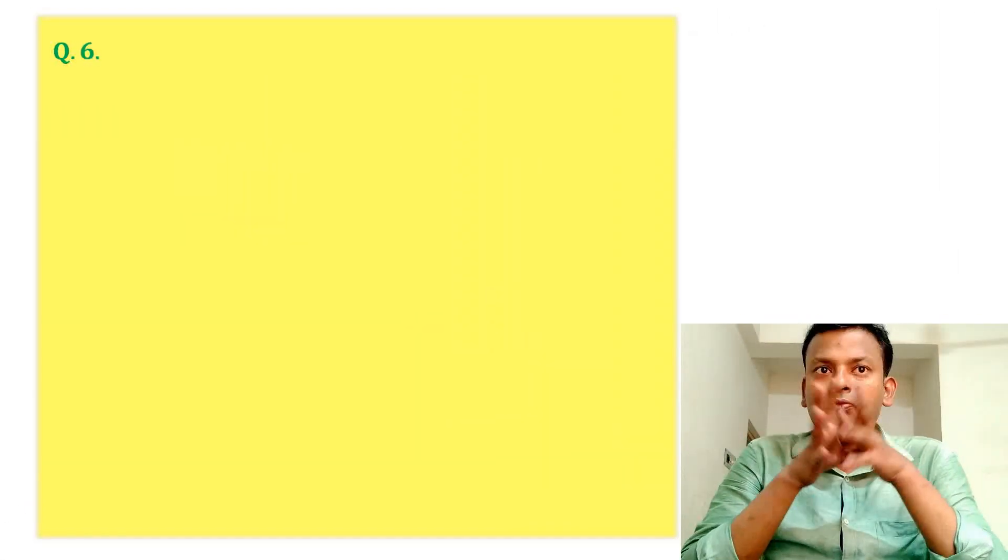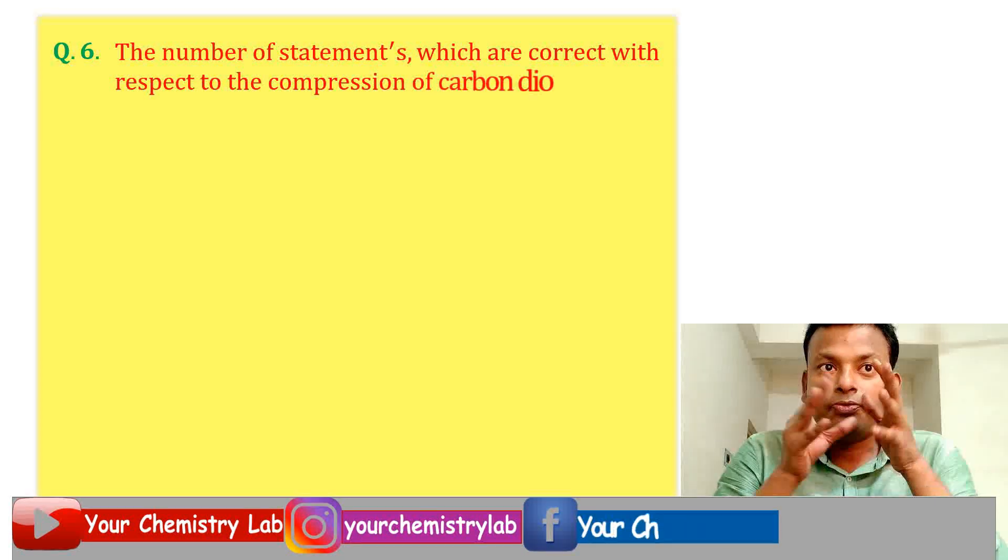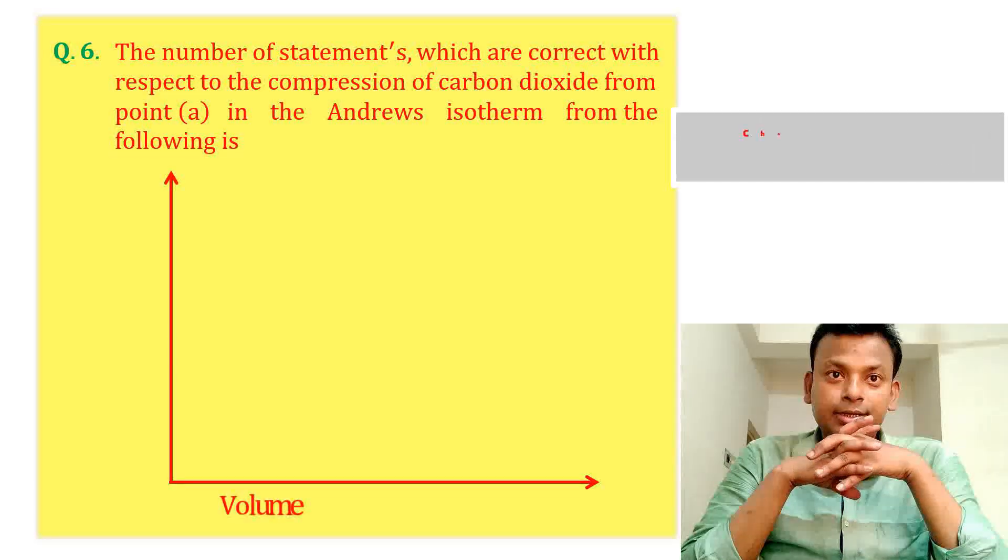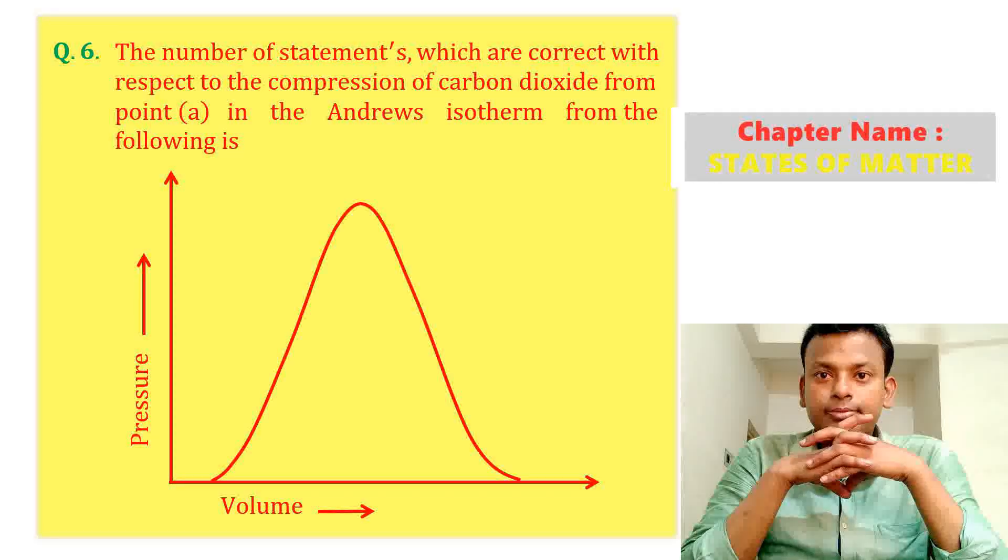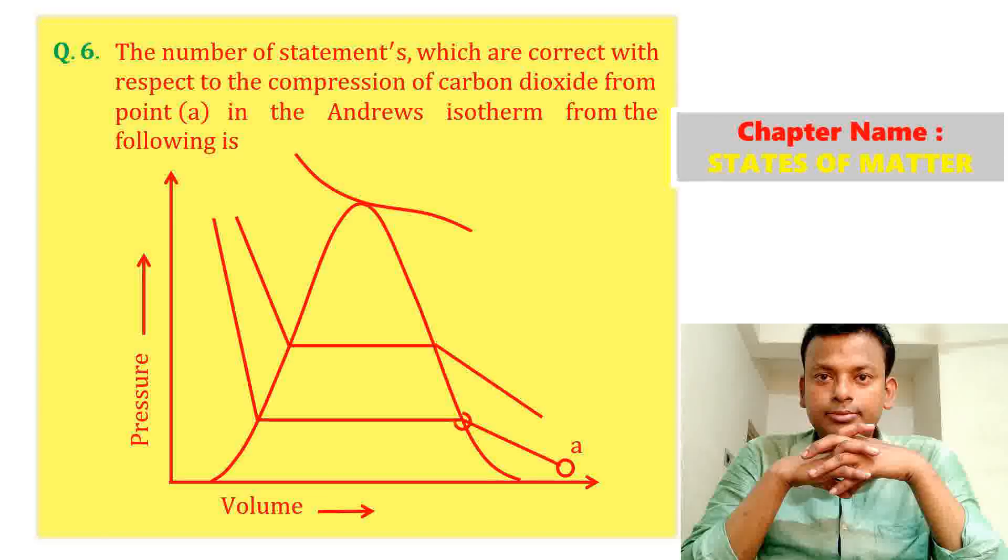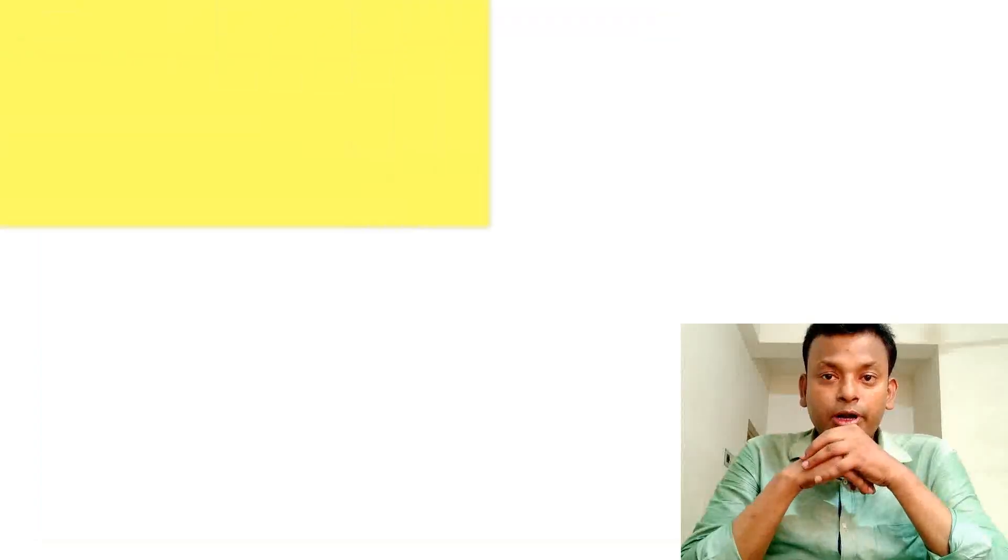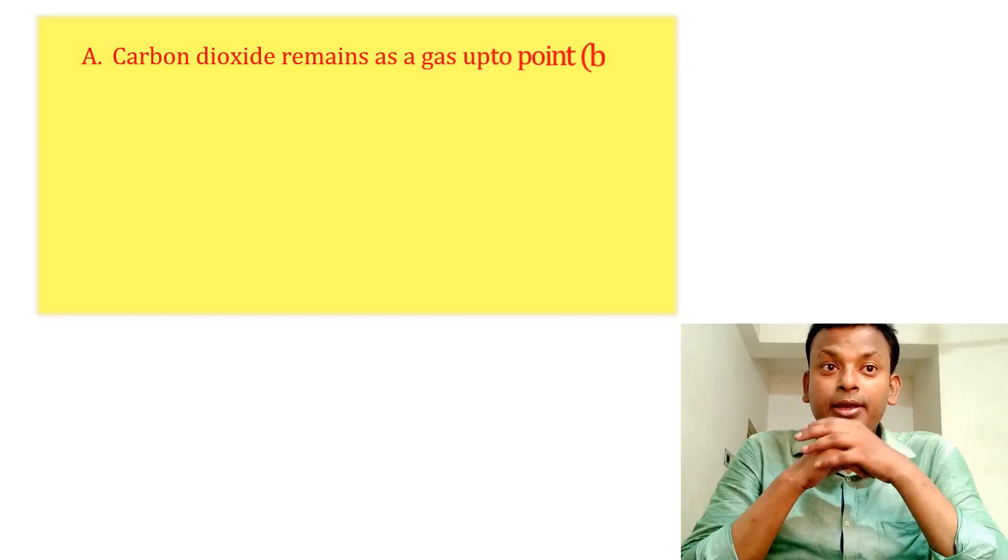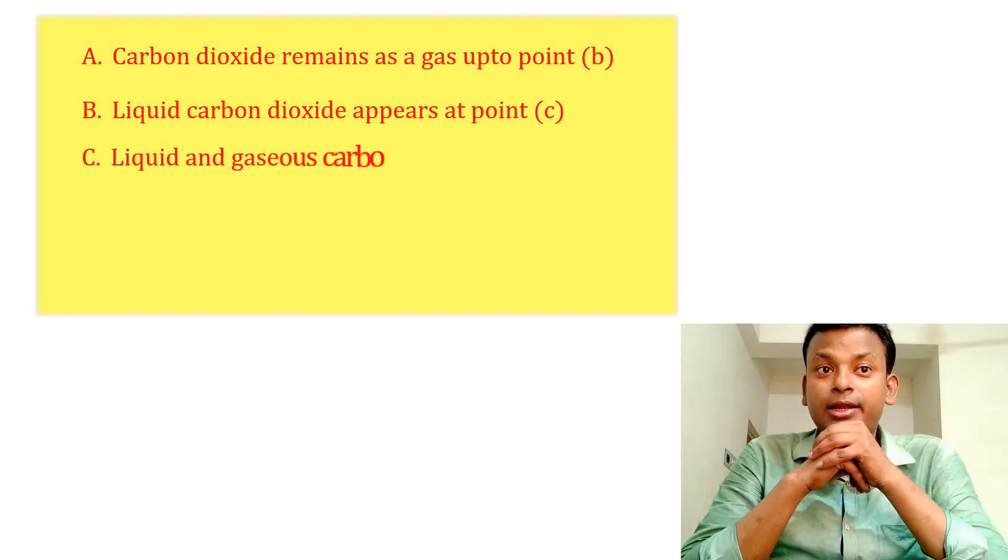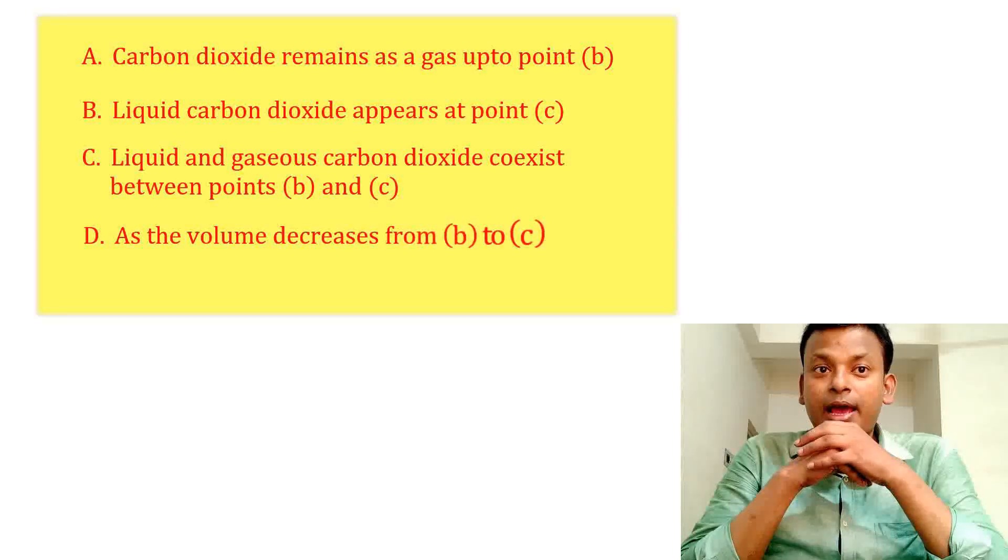Question six: The number of statements which are correct with respect to compression of carbon dioxide from a point A in the Andrews isotherm from the following is - this is the graph. A) carbon dioxide remains as a gas up to point B, B) liquid carbon dioxide appears at point C, C) liquid and gas carbon dioxide coexists between B and C, D) as the volume decreases from B to C the amount of liquid decreases.